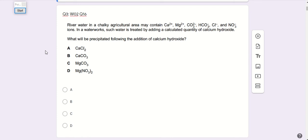This is Chapter 11, Question 3. Now, in river water in a chalky agricultural area, may contain these ions. Okay, there are so many ions.